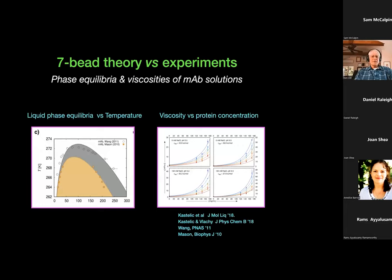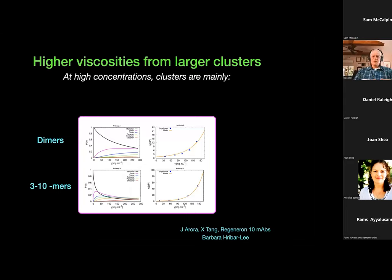This shows predictions for some antibodies from the Slovenian group. The data shows liquid phase equilibria of antibody solutions versus temperature, and with those couple of parameters, you can do pretty well fitting the data. These viscosity curves show non-linear increase with protein concentration. The different curves are just different salt concentrations. The main point is that macroscale properties — viscosity and liquid phase equilibria — can be captured with a couple of parameters in the Wertheim theory, which does the heavy lifting of the solution combinatorics.